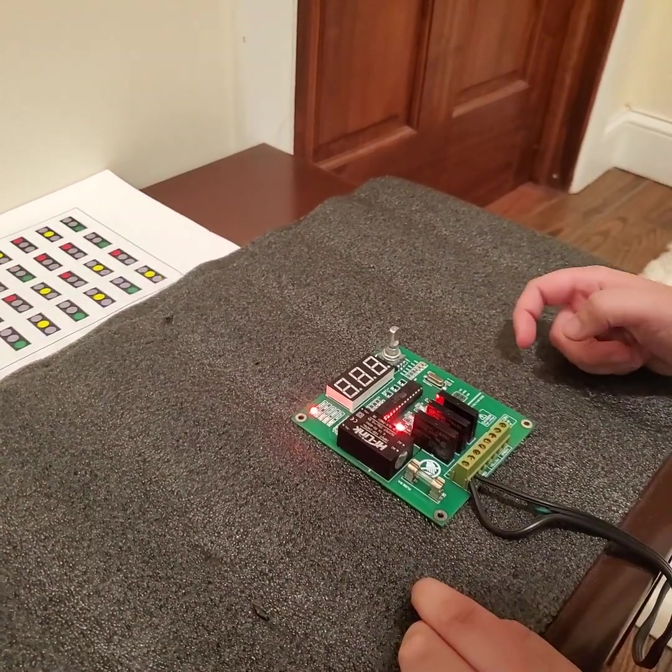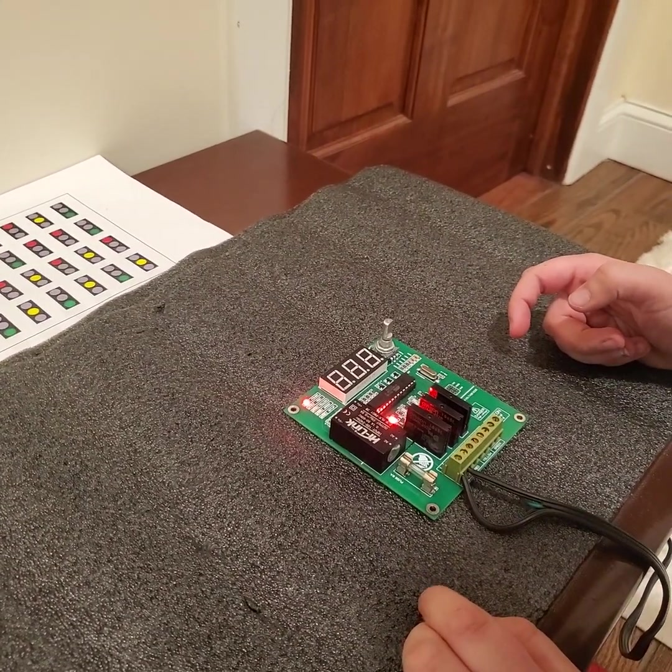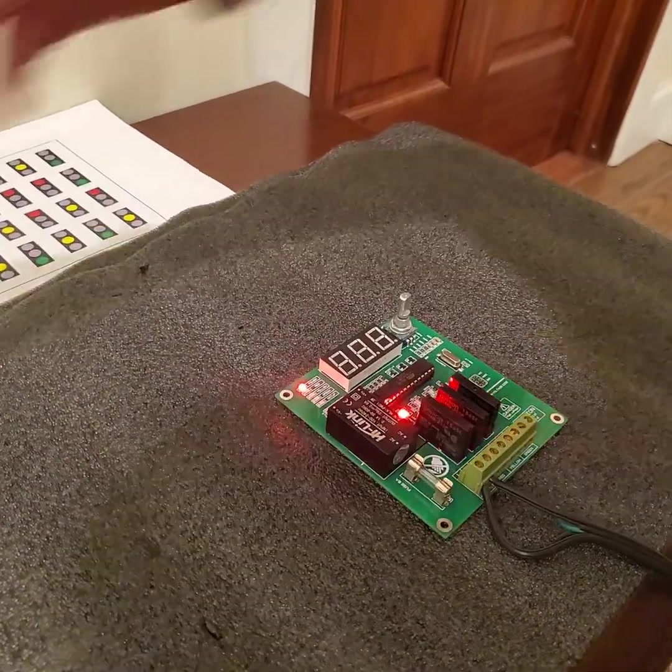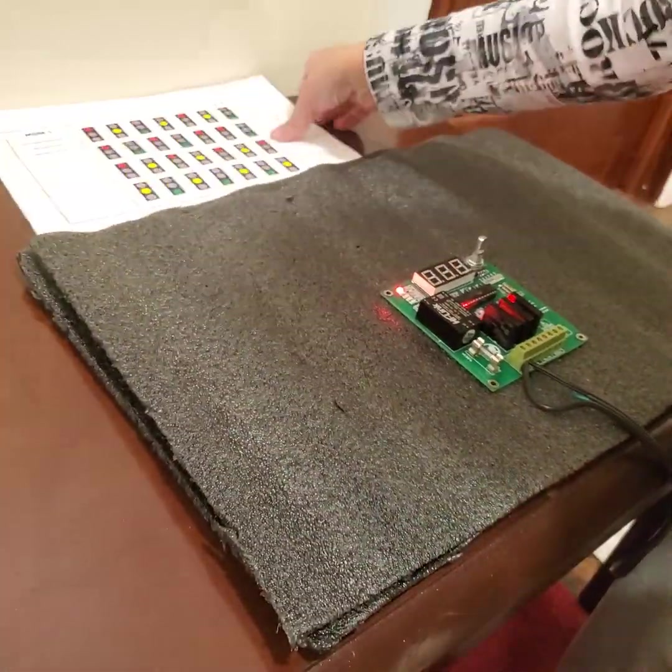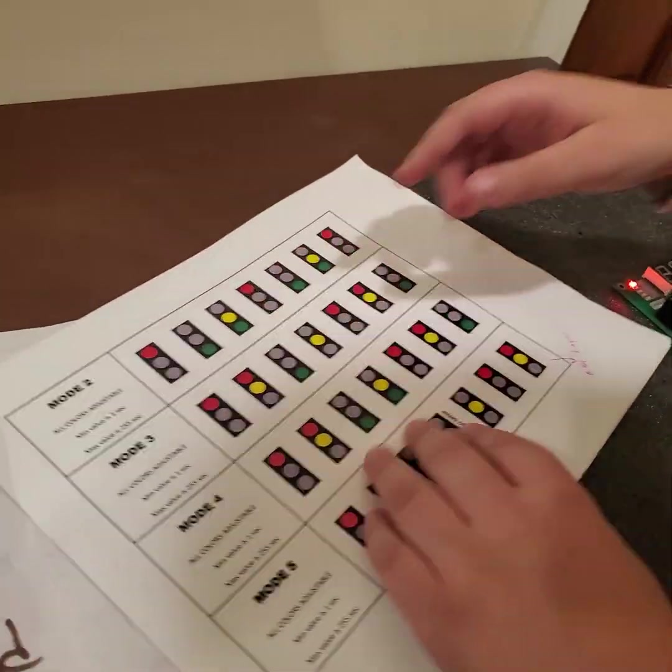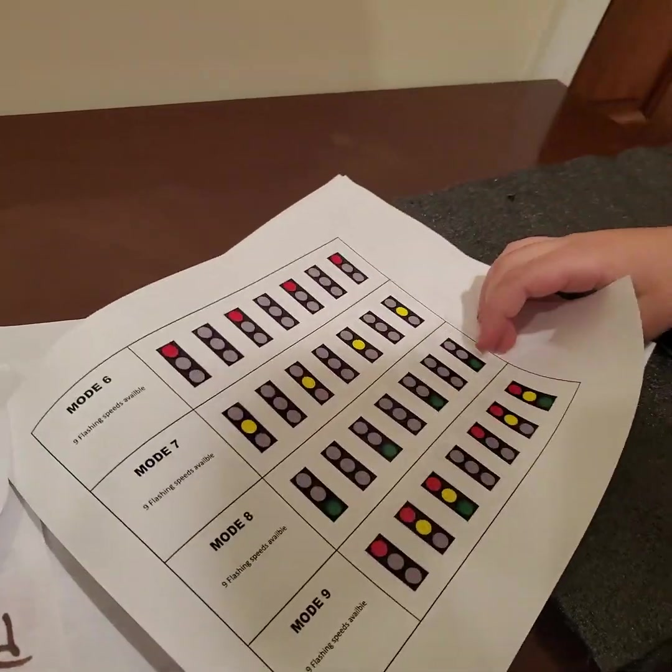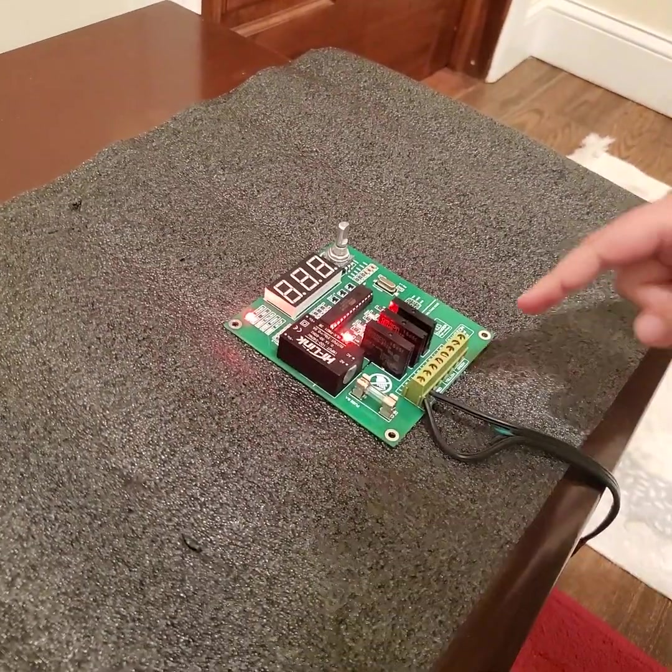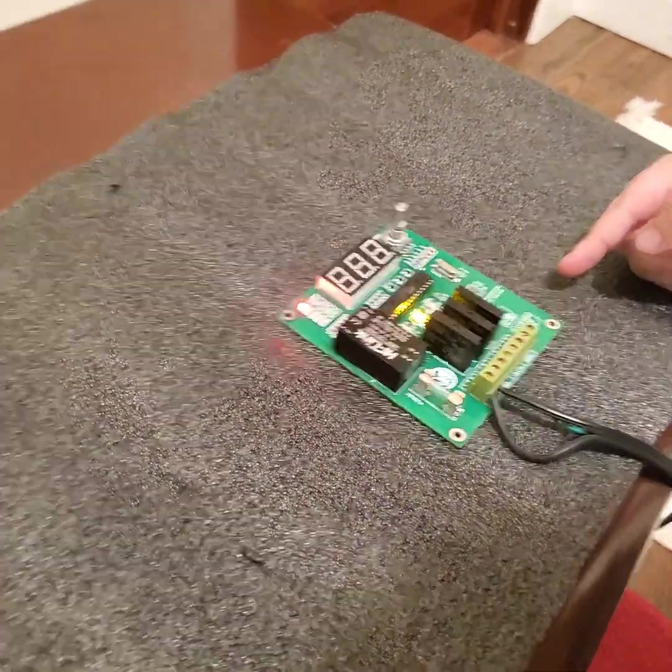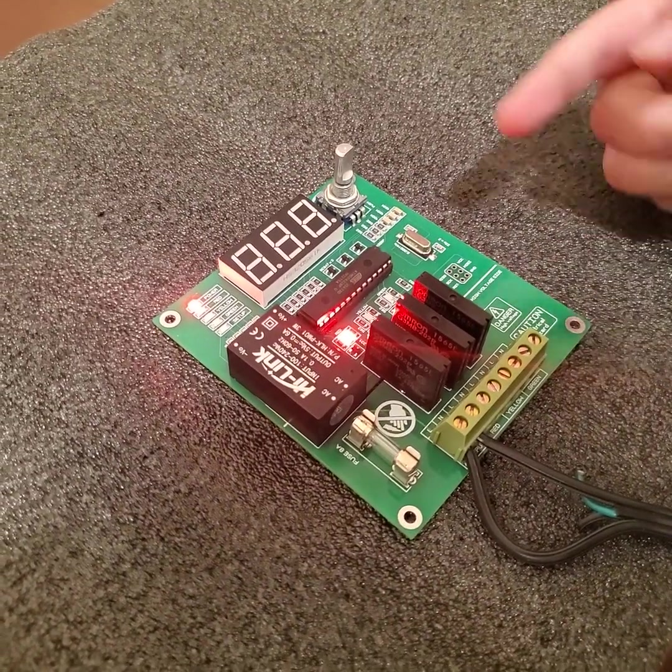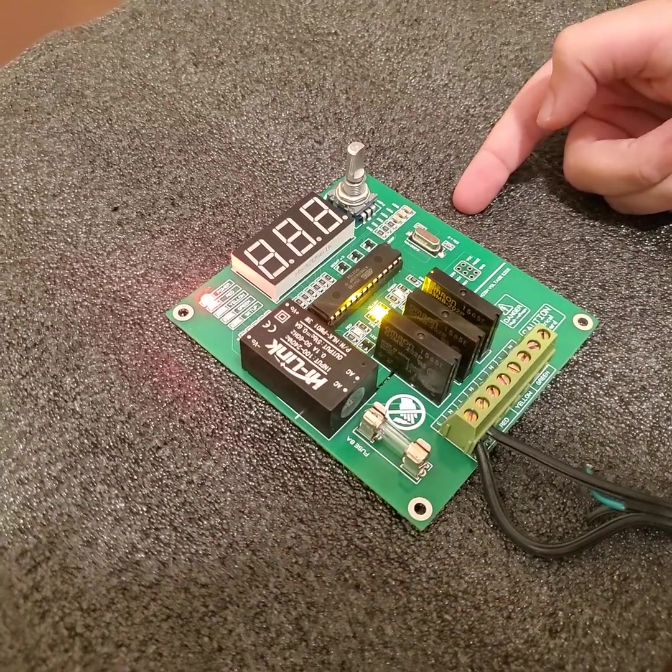This is our three-channel traffic light controller. We're going to demonstrate mode 1, mode 2, and mode 12. Before we get into that, there are some dangerous parts you should know about. You don't want to touch this green part here and the bottom of this while it's on.